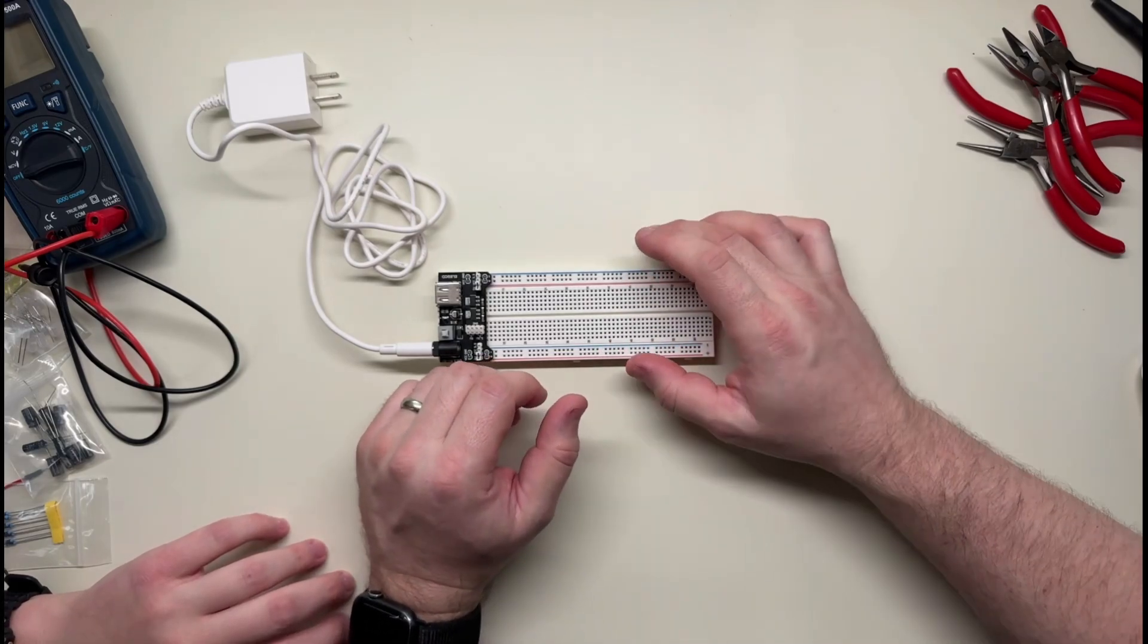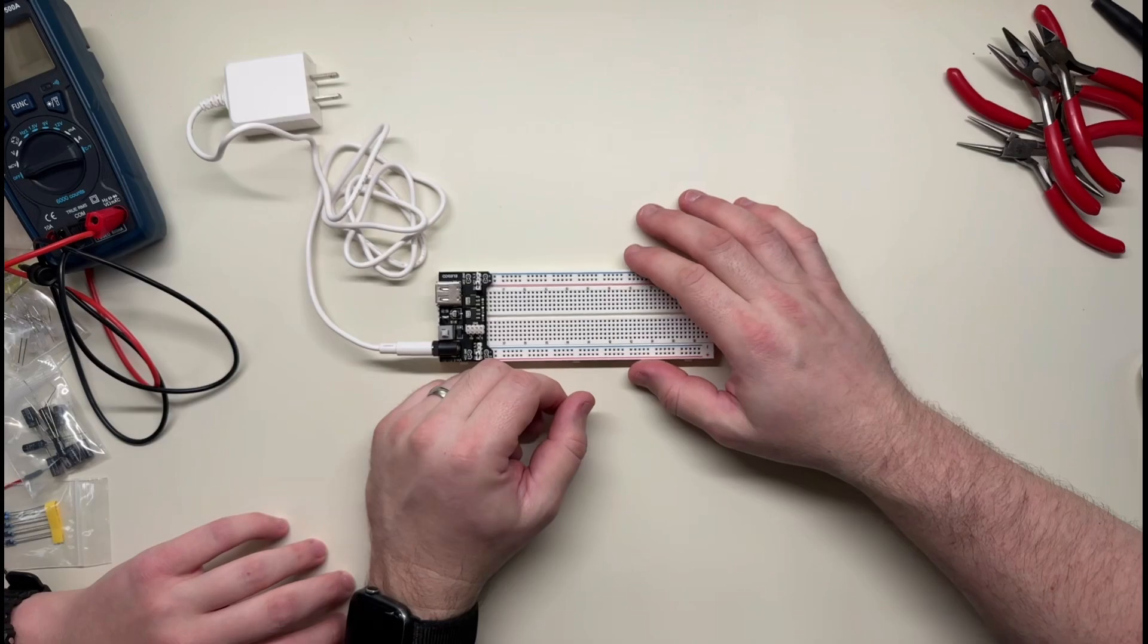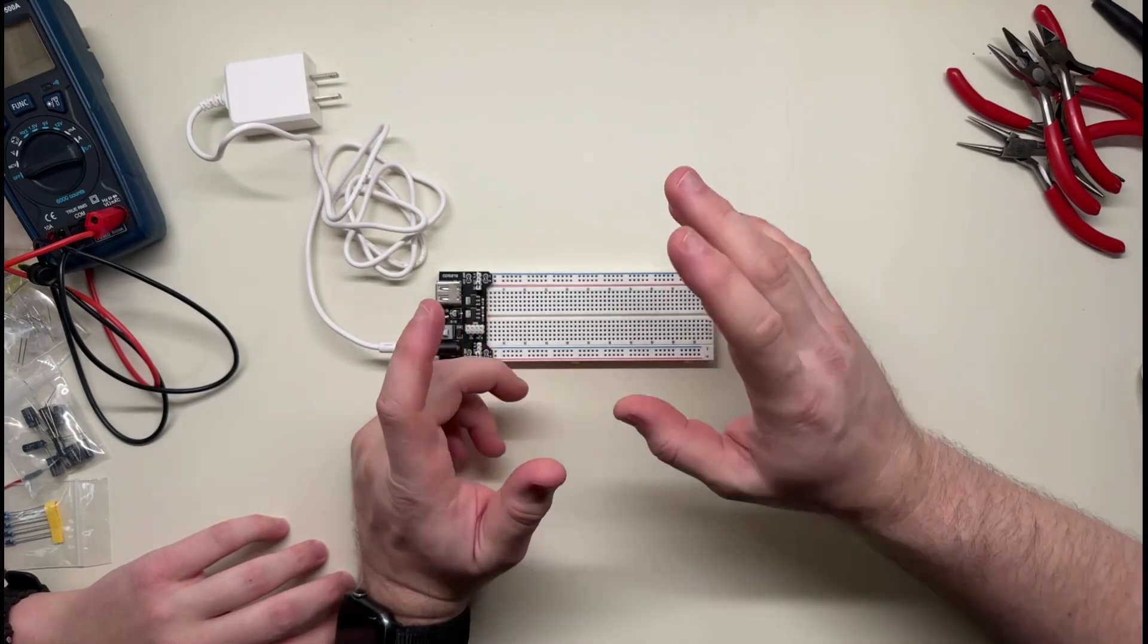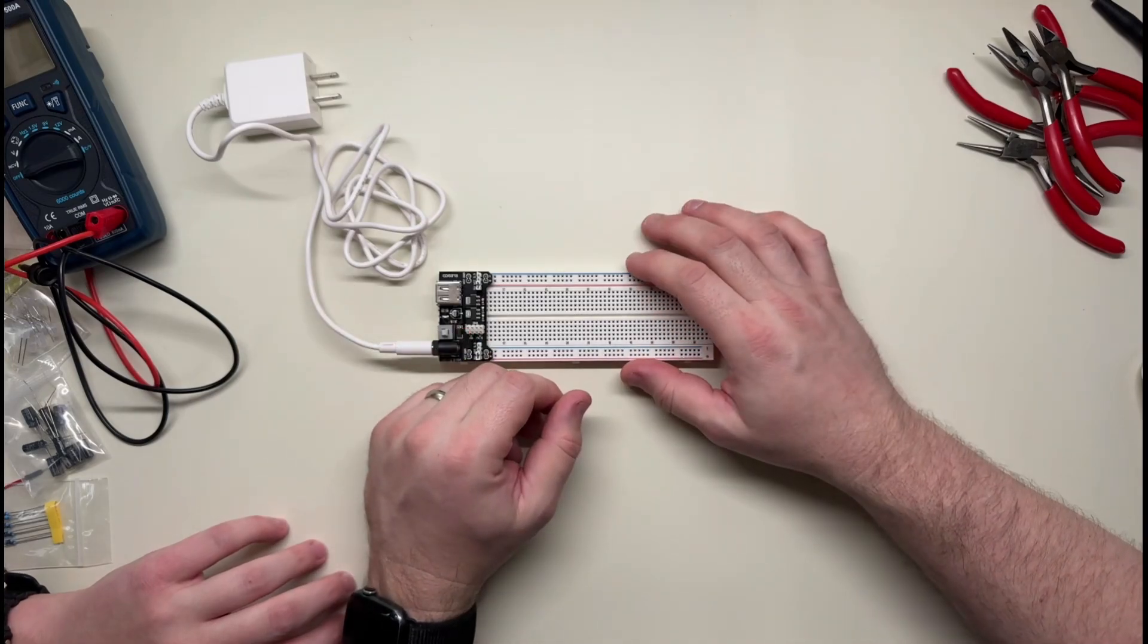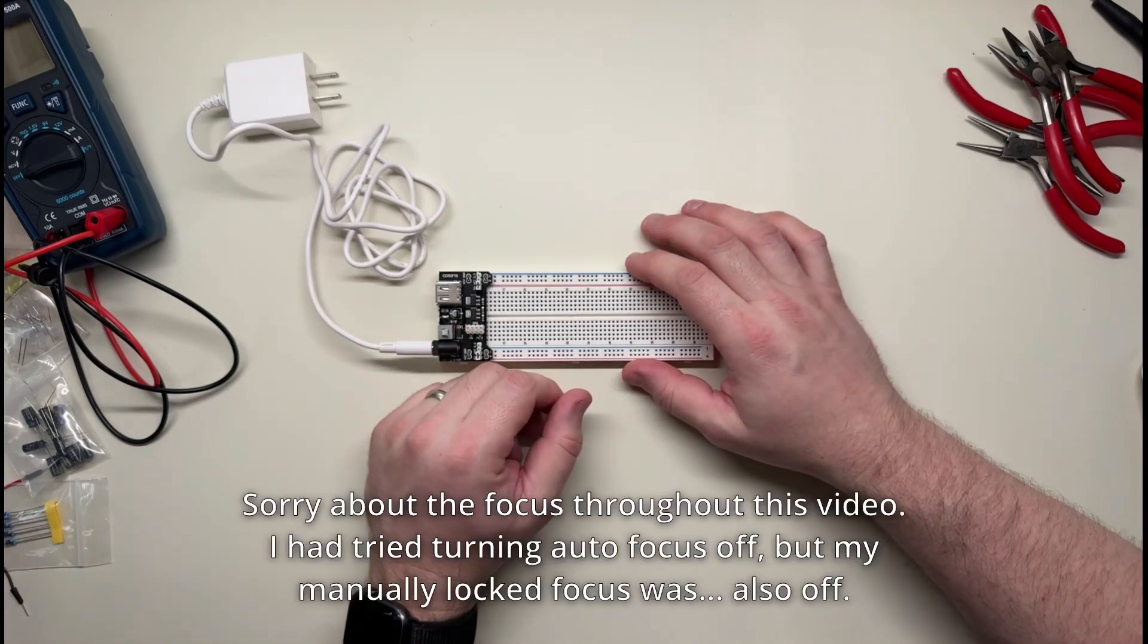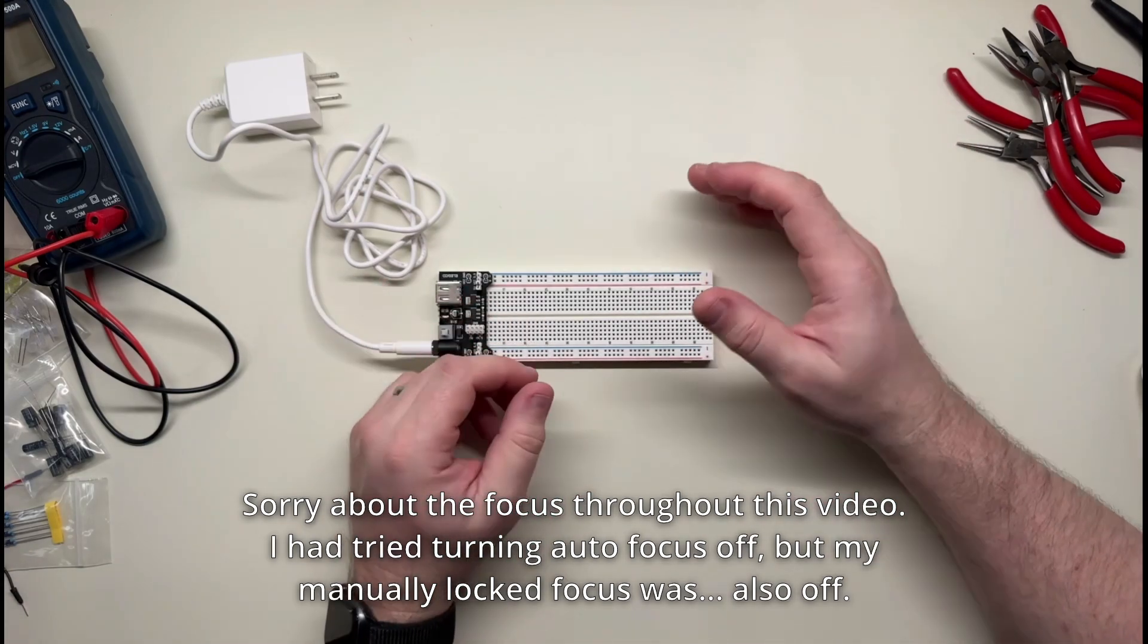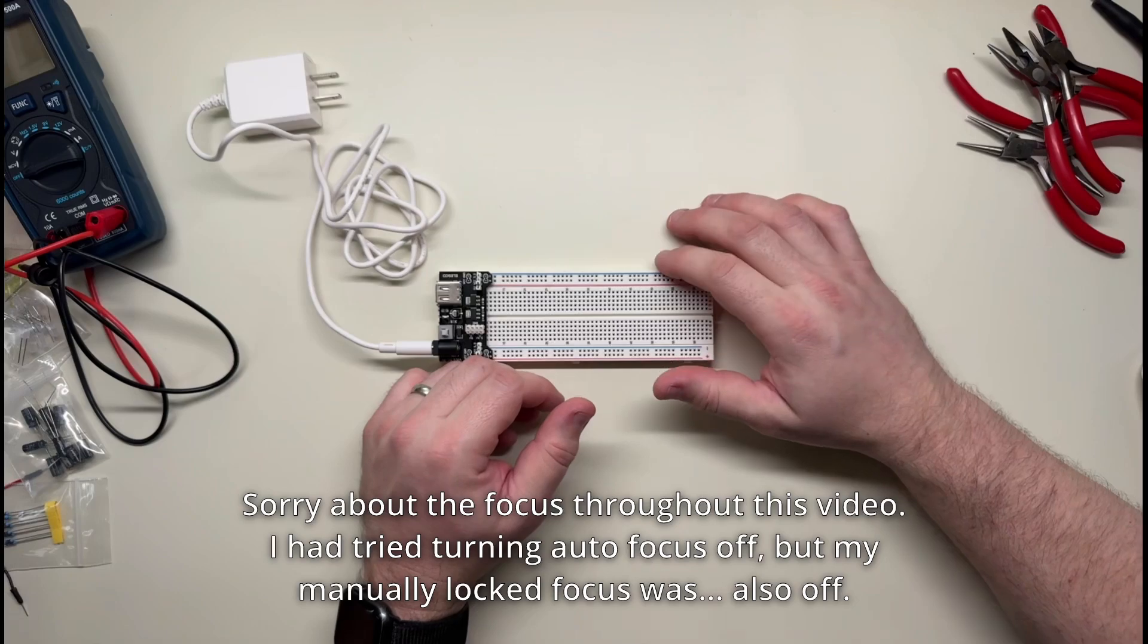So today we're going to try to add some binary numbers. We want to do it with the logic gates directly. So we'll start figuring out what the logic is to do that. We'll do one bit, and then if we can get that to work, maybe we'll do some more bits.